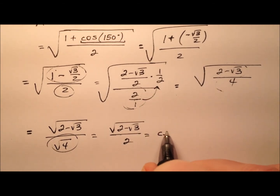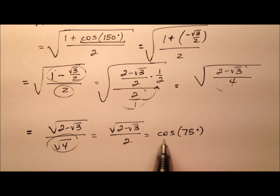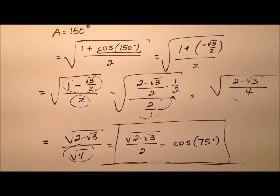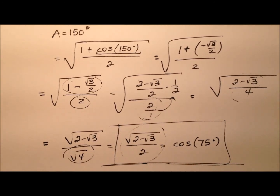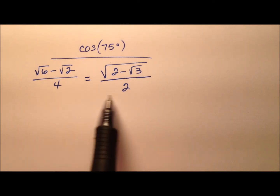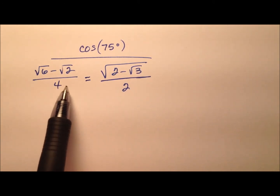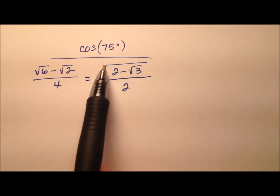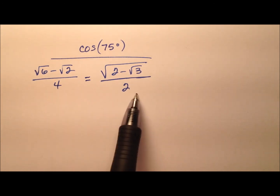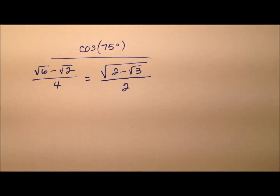So here we have another expression that is the exact value for the cosine of 75 degrees. But if you remember from our first process, this is definitely not what the answer looked like. So let's go ahead and take a look at these two answers side by side and see if they are indeed the same. We have our two exact values: the one from the sum identity for cosine, and the one from the half-angle identity for cosine. They have some similarities but look pretty different from one another.